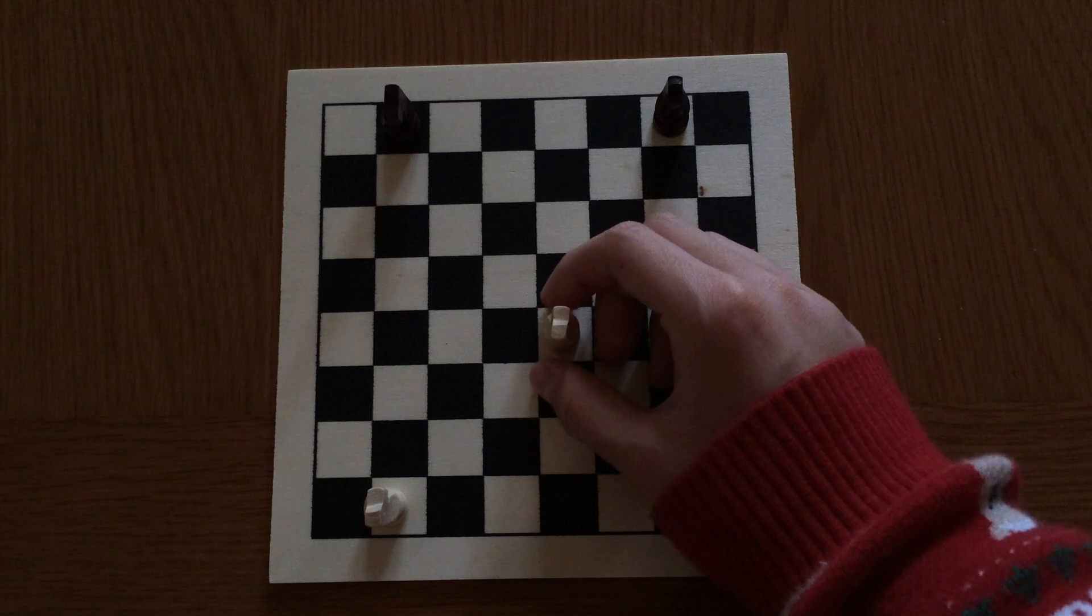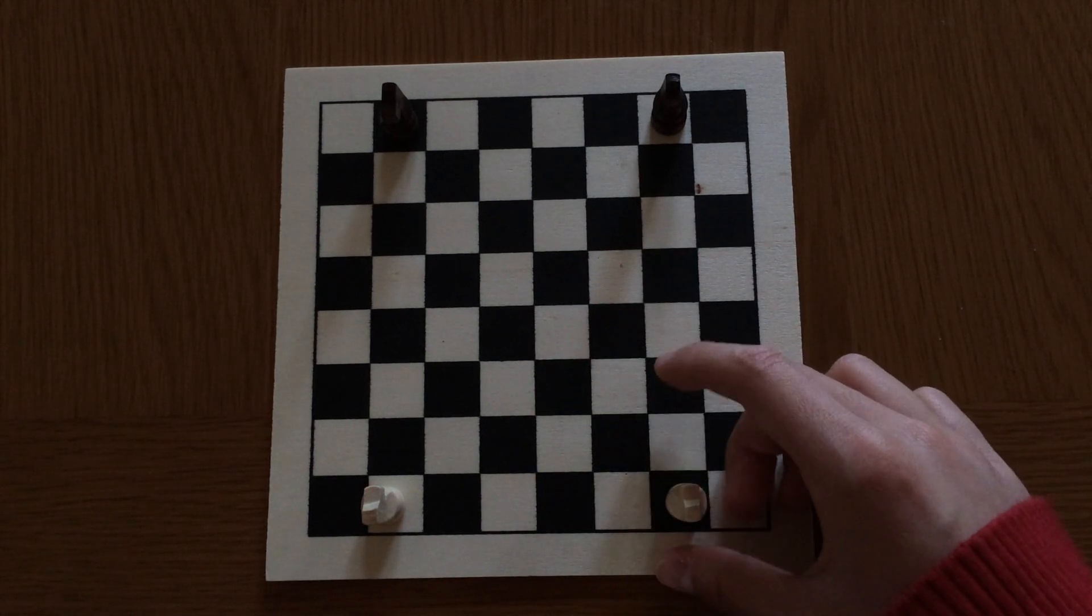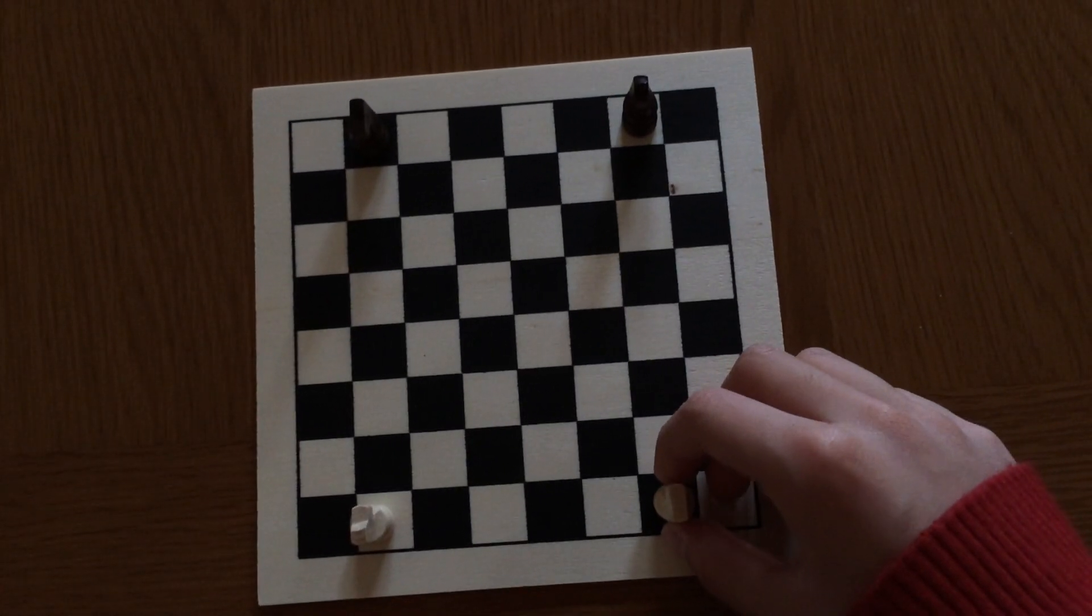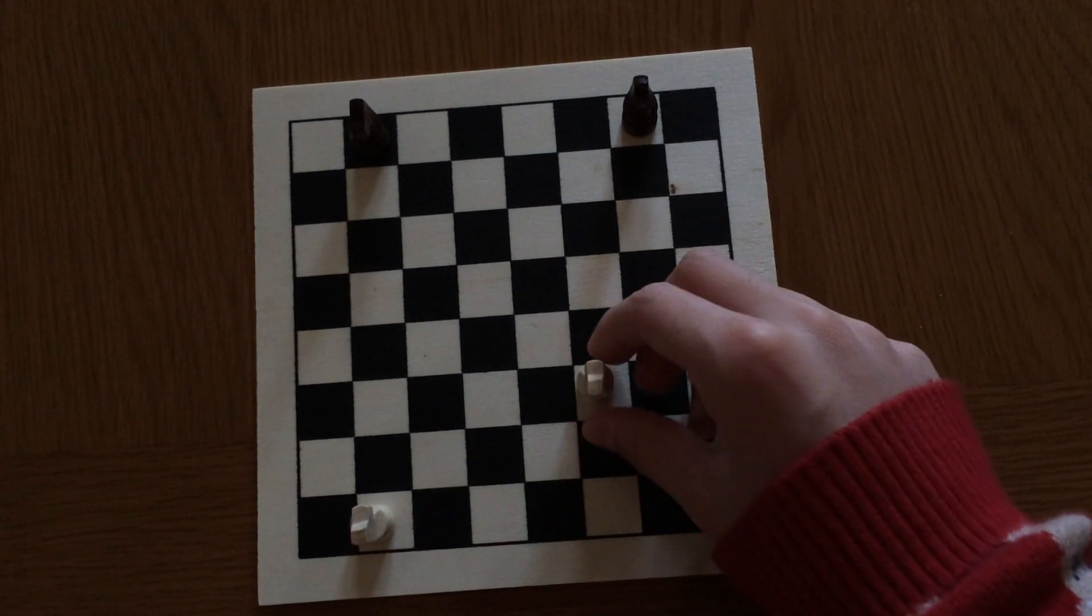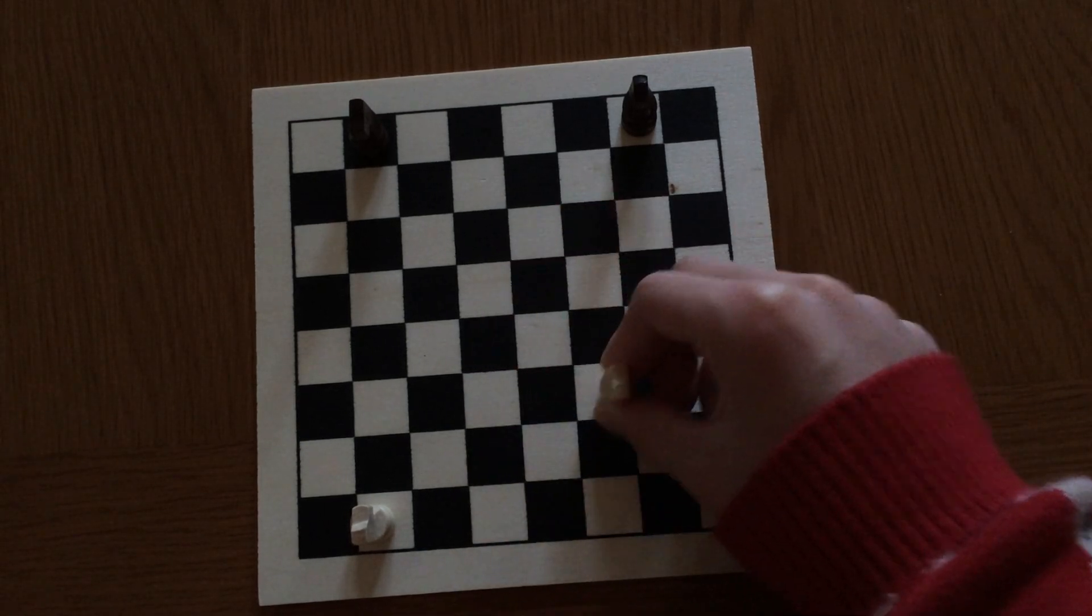So here, the interesting thing about the knight is that it switches the color squares that it is on every time it moves.